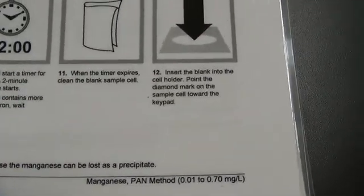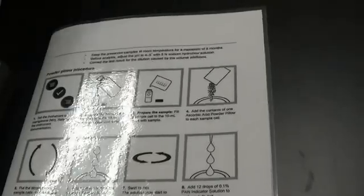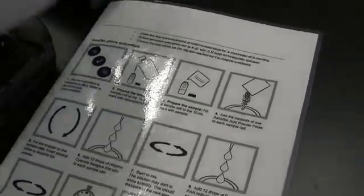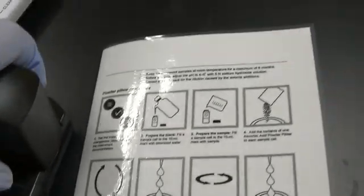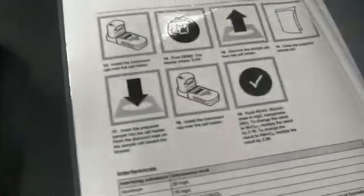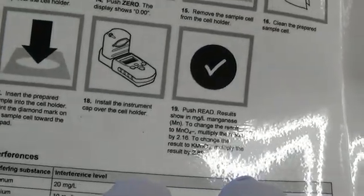Next, I wipe the blank cell and insert it into the instrument. I cover it and press zero to calibrate with the blank. Then I remove it, clean the test sample cell, insert it, and hit the check mark to check the manganese level.